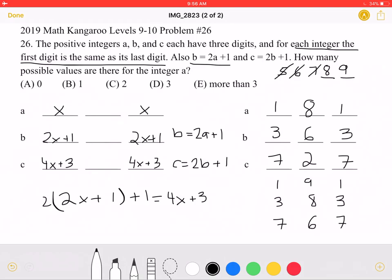So, the question is asking us for how many possible values are there for the integer A, and we can see that we have 2 possible values, 181 and 191, which makes the answer, answer choice C.